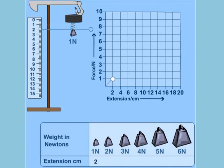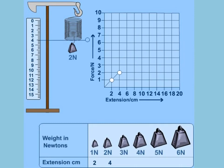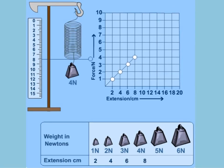To understand Hooke's law, take a stand with a scale attached and hang a spring from it. When a weight of 1 N is hung, the spring stretches 2 cm. When 2 N is hung, it stretches 4 cm. As you increase the weight, the extension also increases, and we get a straight line graph — showing that stress is directly proportional to strain.